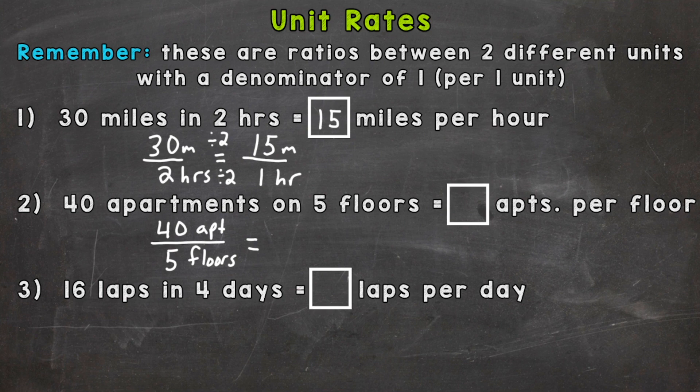So again we need a denominator of 1. So we do that by dividing both our numerator and denominator by 5. I chose 5 so we get this to equal 1. So 5 divided by 5 is 1 per 1 floor. 40 divided by 5 is 8. So there are 8 apartments per 1 floor.